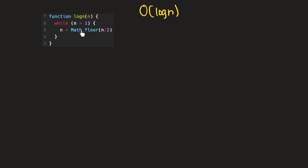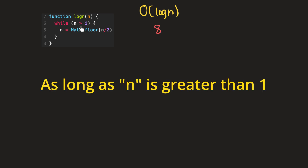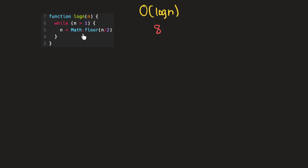So we'll start with a very simple function, which contains only a while loop that assigns a new value to the variable n for each iteration. For this example, let's imagine that we're passing the value eight to n for this function. So that means we'll iterate through this while loop as long as eight is greater than one, and for each iteration we're going to divide our n by two and reassign it to n.